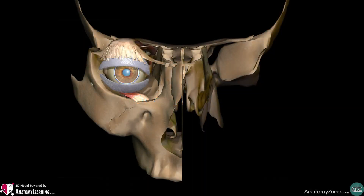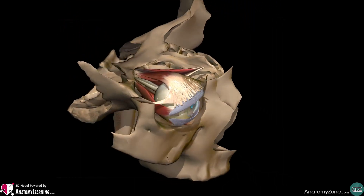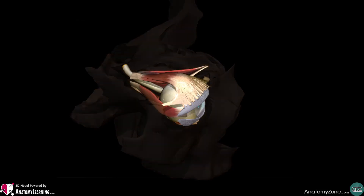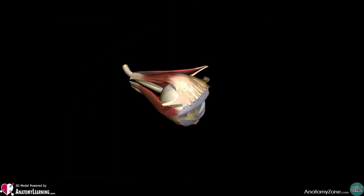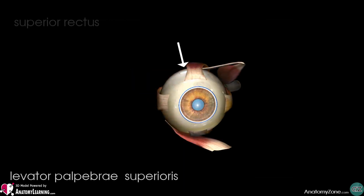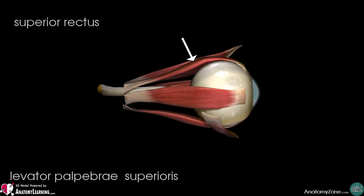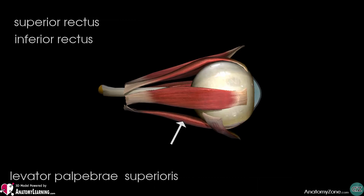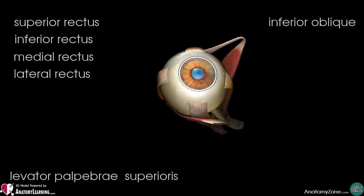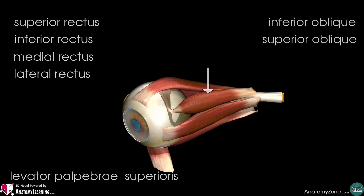The extraocular muscles are located within the orbit but are extrinsic and separate from the eyeball itself. They act to control the movements of the eyeball and the superior eyelid. There are seven extraocular muscles: the levator palpebrae superioris, the superior rectus, inferior rectus, medial rectus, lateral rectus, inferior oblique, and superior oblique.